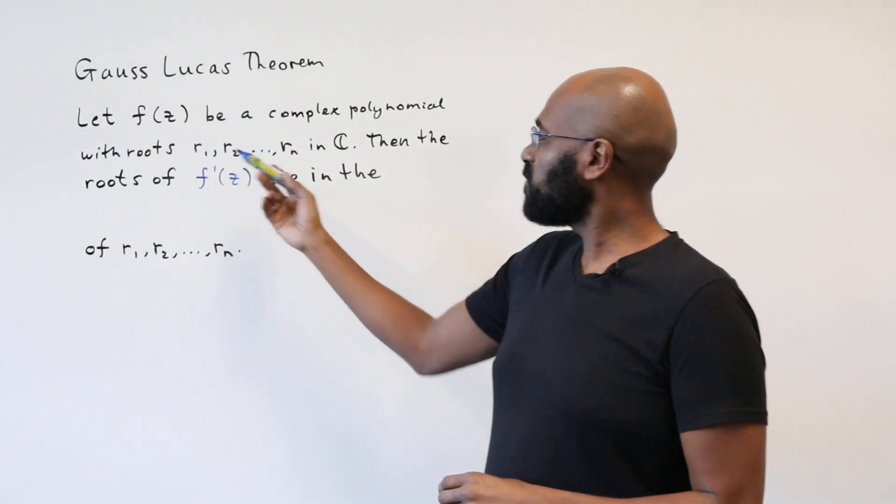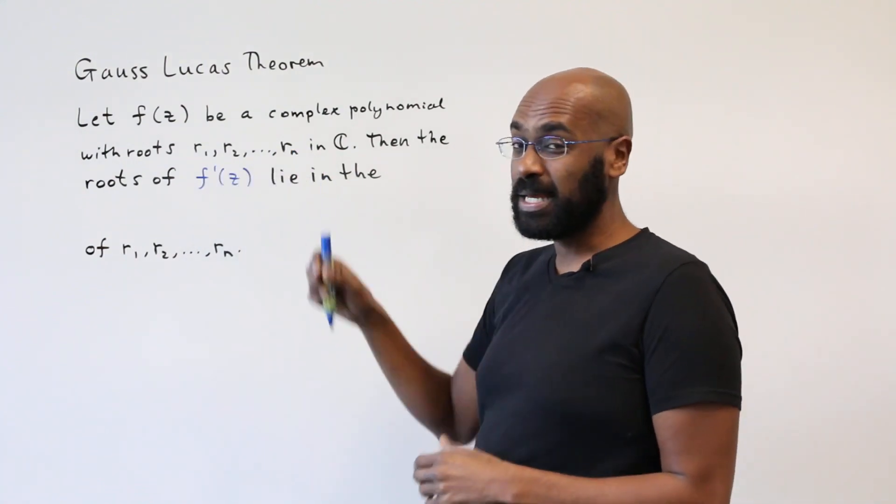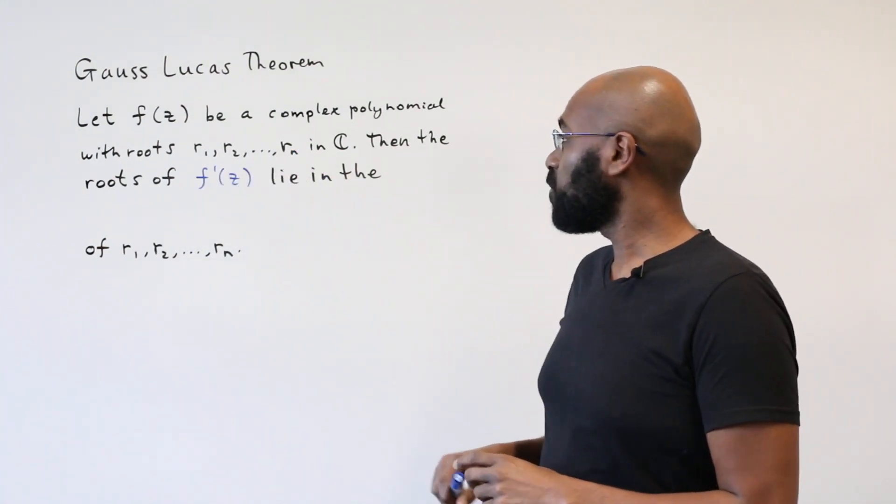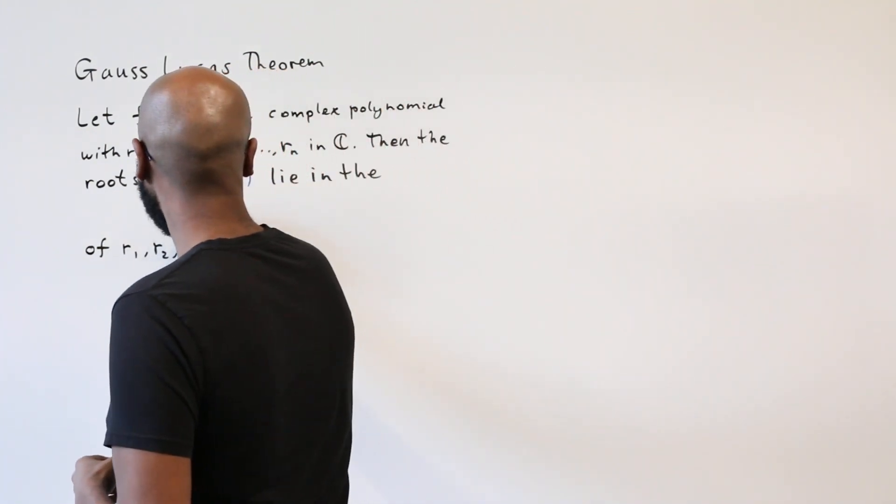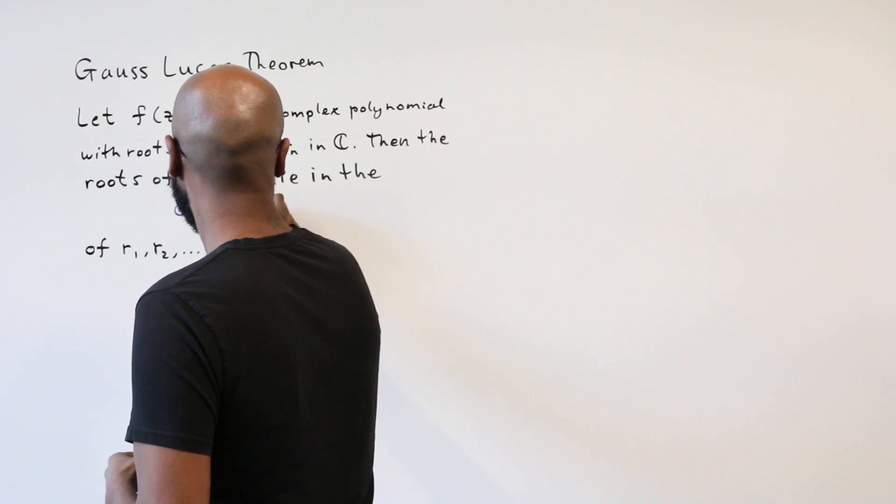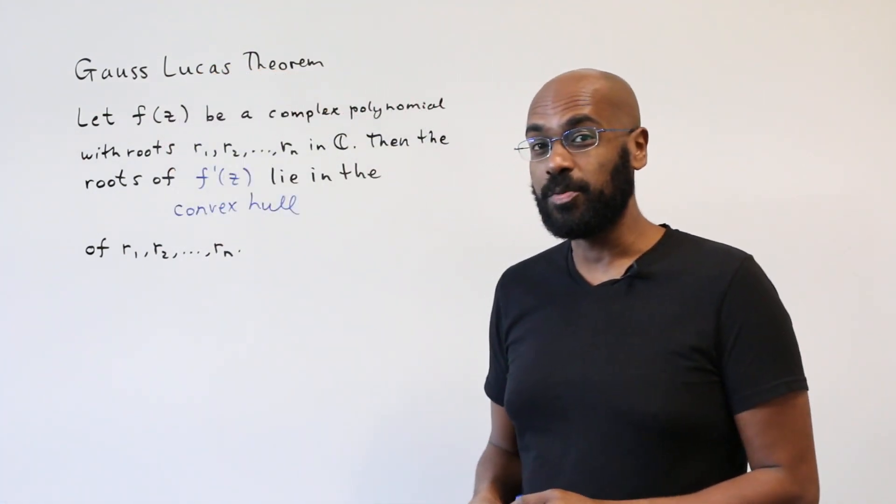So we'll let f(z) be a polynomial with roots r1 through rn in the complex plane. Then the roots of the derivative happen to lie in the convex hull of the roots of the original polynomial.